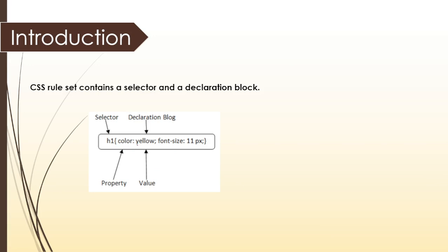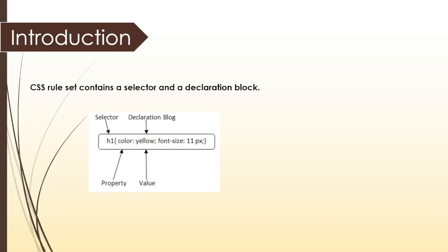Under this declaration block, we have some different parts. For example, color is the property and yellow is its value. Similarly, font-size is the property and 11px is the value of that particular property. Remember one more point: under the curly bracket, you write the property first, then separate it with a colon, then add the property's value, then close it with a semicolon. Semicolon is used here to separate different properties.